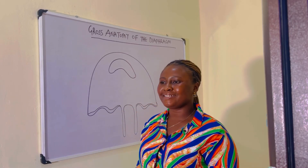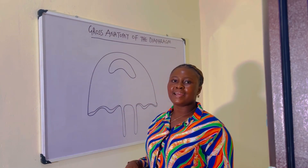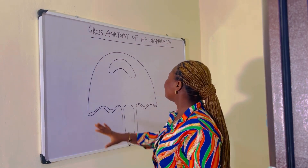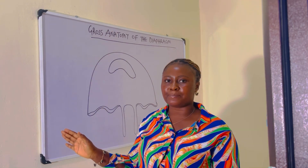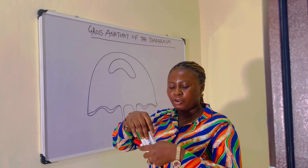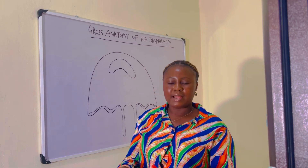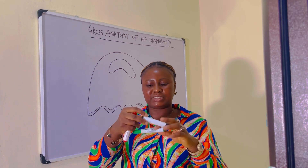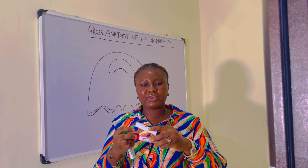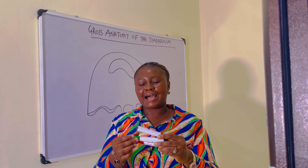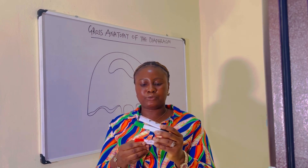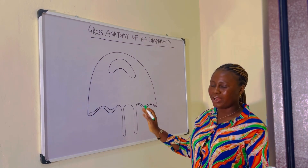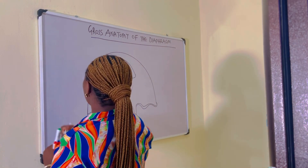Hello guys, welcome back to my channel. Today let's discuss the gross anatomy of the diaphragm. The diaphragm is a dome-shaped musculotendinous muscle that serves to separate the thoracic cavity from the abdominal cavity. The thoracic cavity is above and the abdominal cavity is below, with the diaphragm lying between them. The diaphragm is referred to as the thoracoabdominal diaphragm.